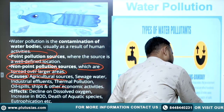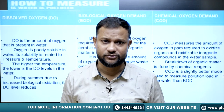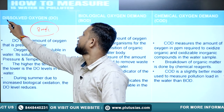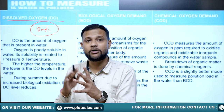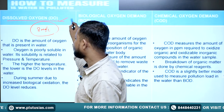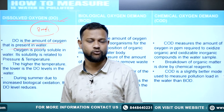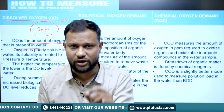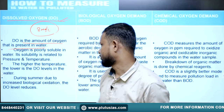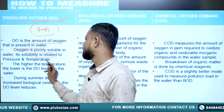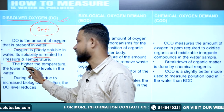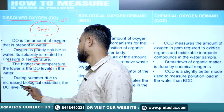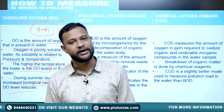In this context, there are three terms. Dissolved oxygen — as we just saw, 8 mg per liter is the required amount; above that, the water is nutrient-rich. Dissolved oxygen is the amount of oxygen dissolved in the water, and the higher that amount, the more suitable the water is for life. Oxygen is poorly soluble in water; its solubility is related to pressure and temperature. Higher temperature means lower dissolved oxygen levels, and during summer, due to increased biological oxidation, the DO level reduces.